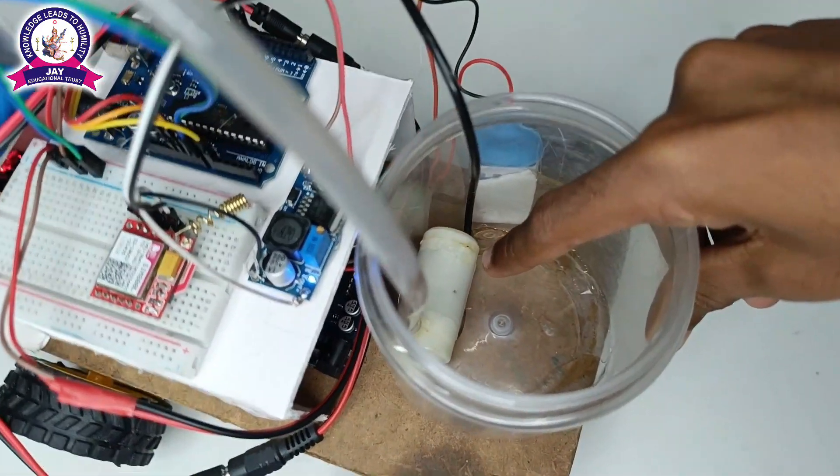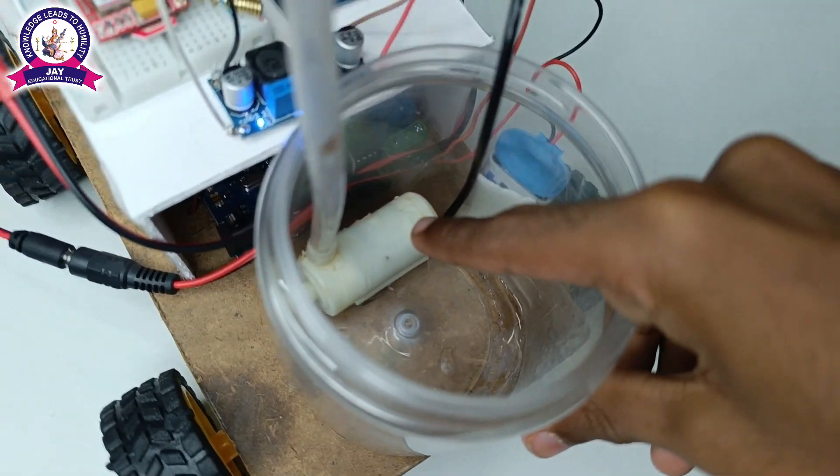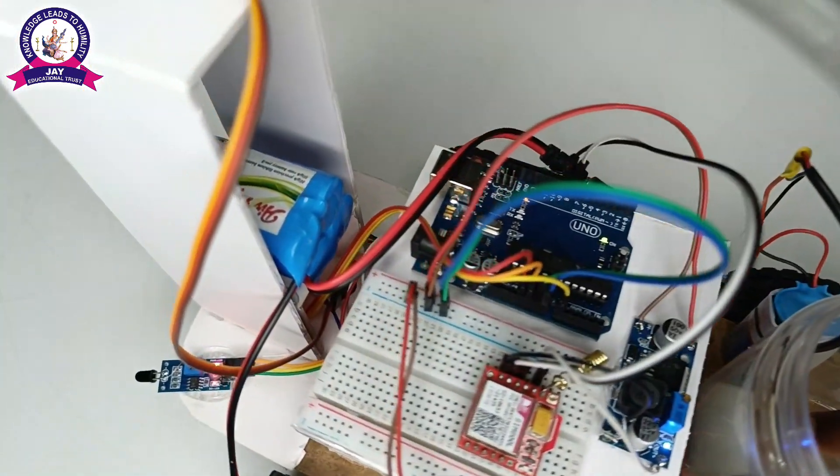This is a water pump motor. It is used to spread the water during fire accident by getting signal from flame sensor and Arduino UNO.